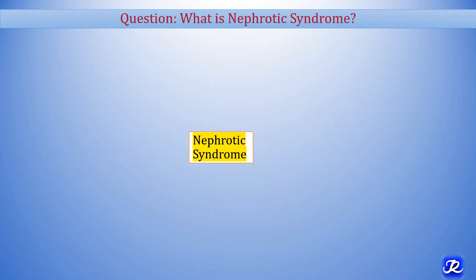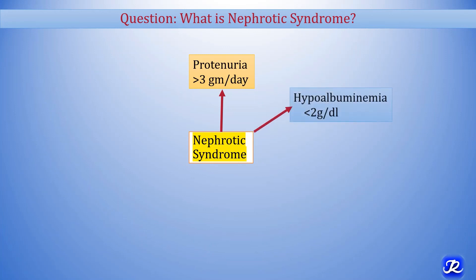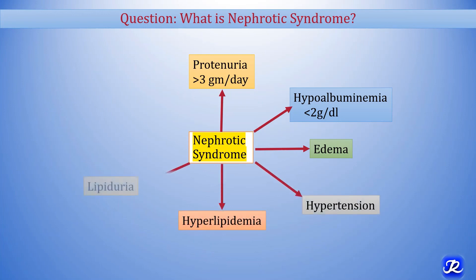What is nephrotic syndrome? It is a clinical complex characterized by a number of renal and extra-renal features: proteinuria more than 3 grams per day, hypoalbuminemia of less than 2 grams per deciliter, edema, hypertension, hyperlipidemia, lipiduria, and hypercoagulability. The case of nephrotic syndrome will be discussed in detail later in a separate video.